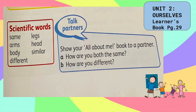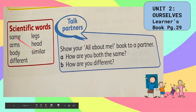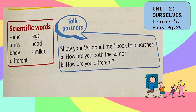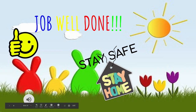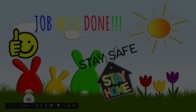These scientific words — same, arms, body, different, legs, head, similar — you can use these when talking to your partner. When you are done with your All About Me book, show it with your partner and discuss: how are you both the same? How are you different? I have given you worksheets and I know you can do it completely and neatly. Thank you so much for listening! Bye!